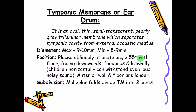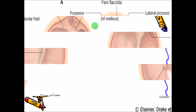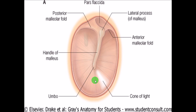The mallular fold divides the tympanic membrane into two parts — the posterior mallular fold and the anterior mallular fold. This divides the whole tympanic membrane into a top part called the pars flaccida, and the remaining part called the pars tensa.